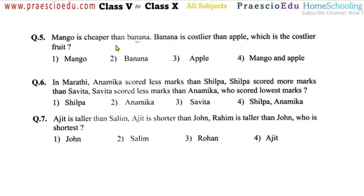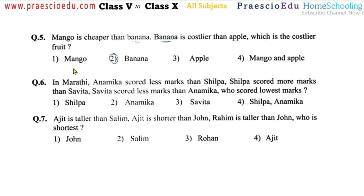Question number five: mango is cheaper than banana, banana is costlier than apple. This means banana is costlier than both mango and apple. Which is the costlier fruit? Banana is the costliest because mango is cheaper than banana, and apple is also cheaper than banana. So banana is the costlier fruit, given in option number two.